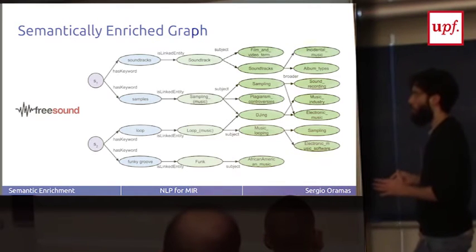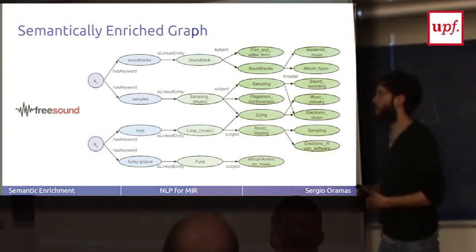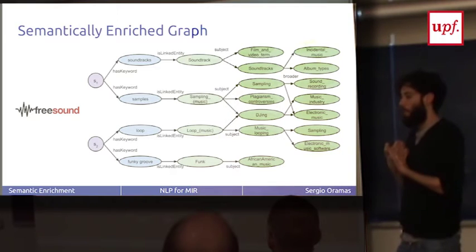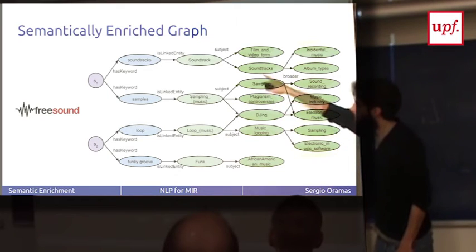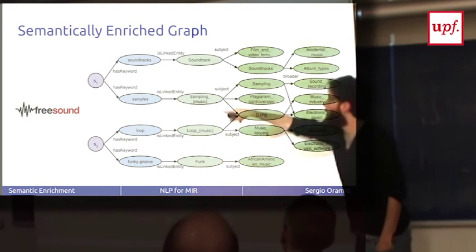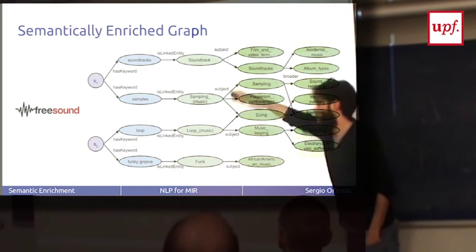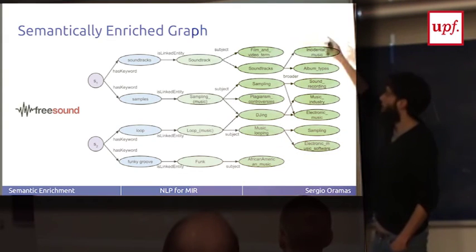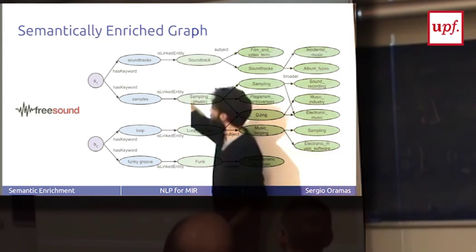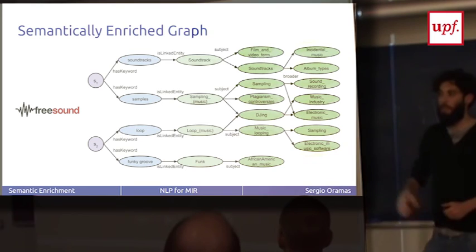This is another example of a semantically enriched graph. Here, in this case, from Freesound. Freesound is our site where users can upload sounds and add a description to the sounds. So what we did is we applied entity linking to the description of the sounds, and then we got this is a sound and this is another sound. We have the two words that were identified as entities, the Wikipedia results. And then from Wikipedia we extract more information, the categories of these entities and the broader categories. So in this way, at the beginning in the document you just have this, if you do this, at the end you have all this information describing the item.